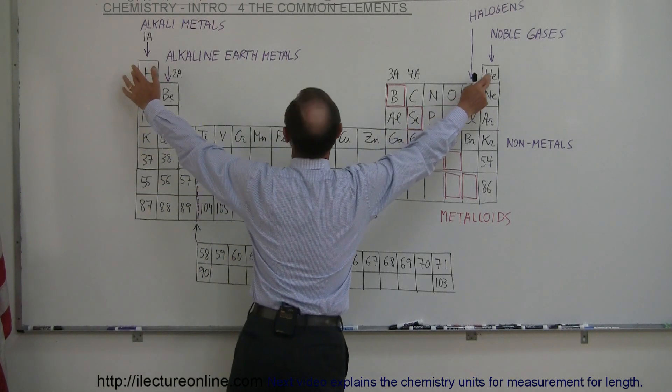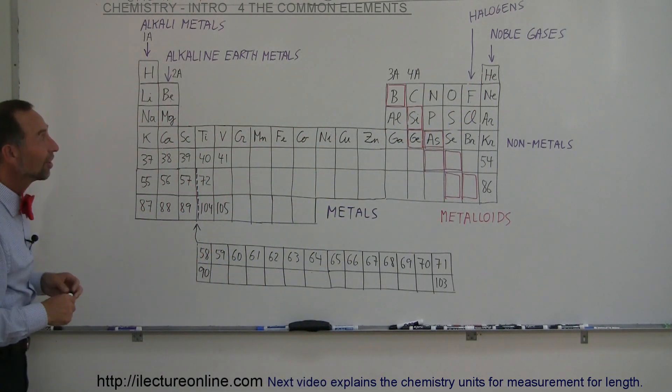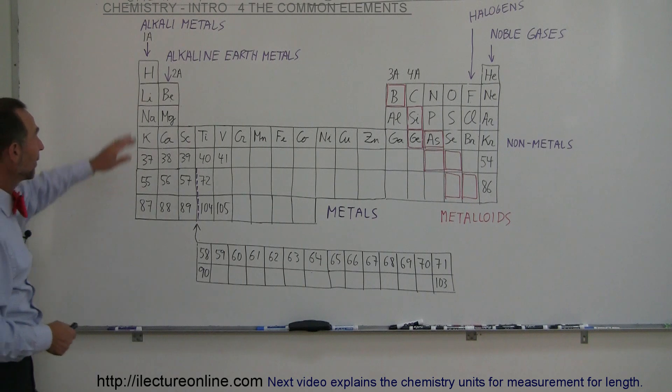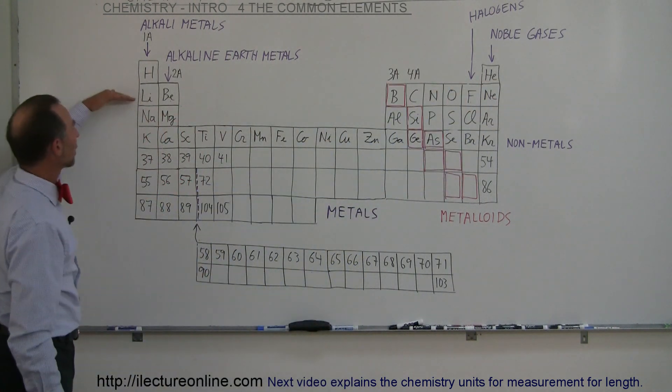So these are the two ones that consist of—most of the universe consists of just the hydrogen and helium. Matter of fact, our Sun is 99% hydrogen and helium. Anyway, so we have hydrogen here, we have helium there, then we go to the next row here.